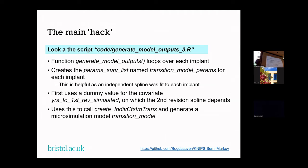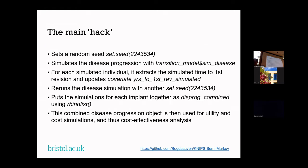For the first run, the model simulates time to first revision using existing splines with a particular set seed. It then changes the covariate going into the model — using the simulated time to first revision as a covariate to adjust time to second revision, even though it hasn't happened yet. Using the same set seed gives the same times to first revision on the second run. This required two runs of hesim to implement this dependence, then combining the disease progression objects, simulating utilities and costs — that was the cost-effectiveness analysis.